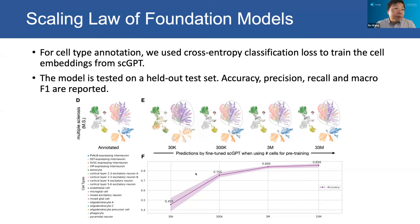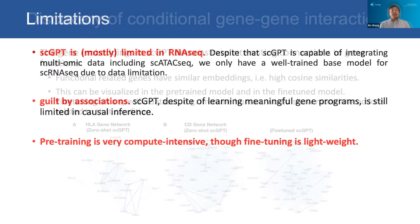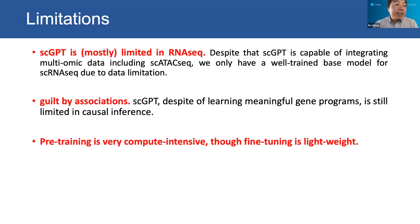Moving from cell type annotations, we find a very interesting phenomenon for foundation models — it's called the scaling law of foundation models. Not only does SCGBT outperform on tasks related to cells, we also show good capacity on tasks related to genes. That basically summarizes most of the technical details and applications of SCGBT.